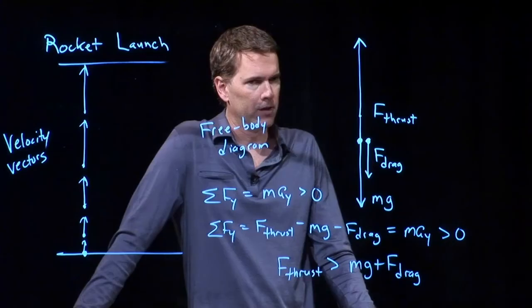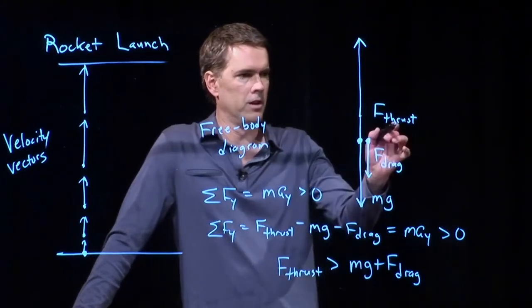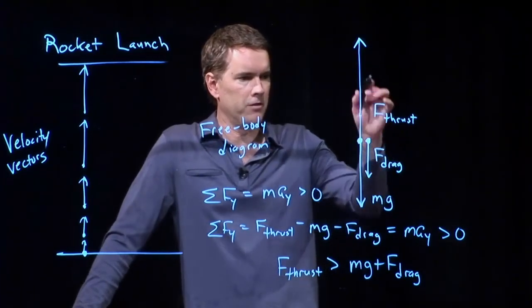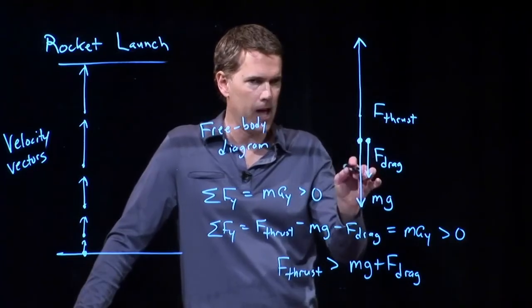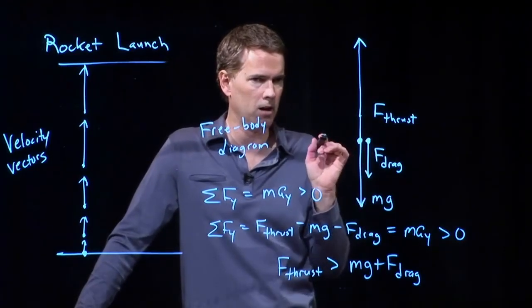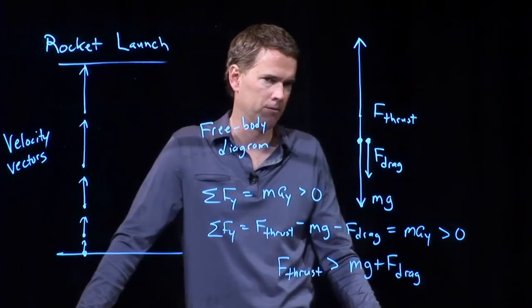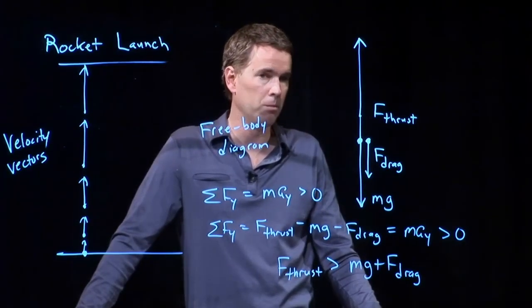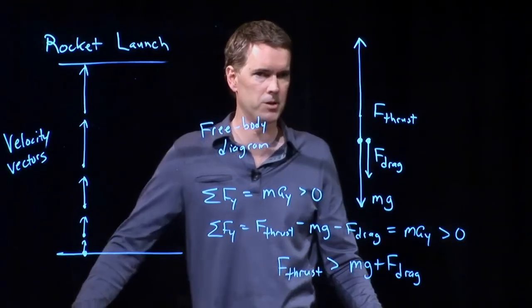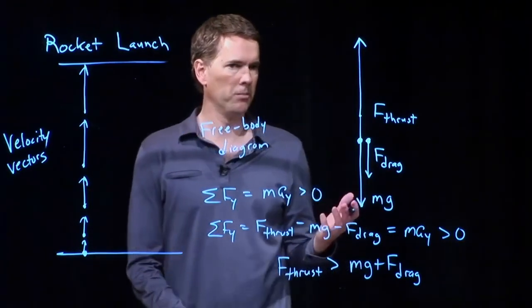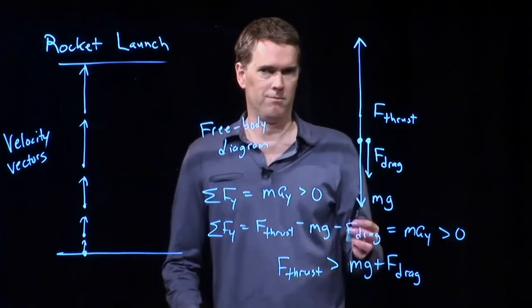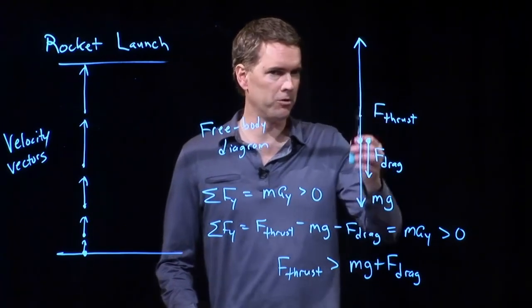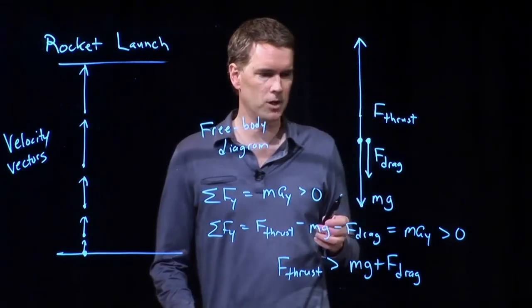What if it is not bigger than both of those things? If F thrust is, in fact, equal to Mg plus F drag, Onda, what do you think happens? It would be at constant speed. Okay. It would be at constant speed. Acceleration would be zero. It would be at constant speed. That would be maybe what we would call terminal speed for the launch. Good.